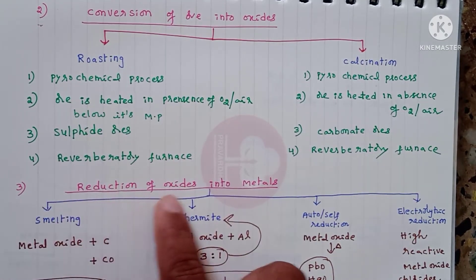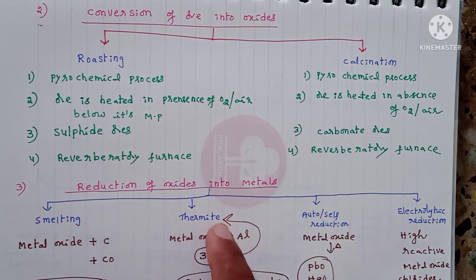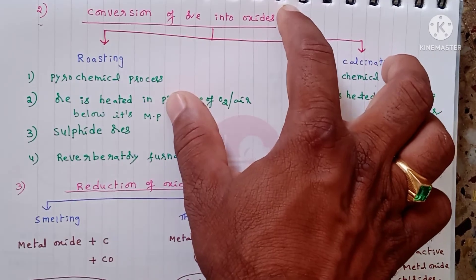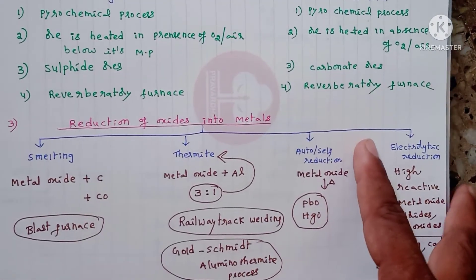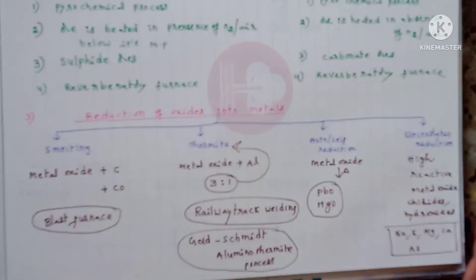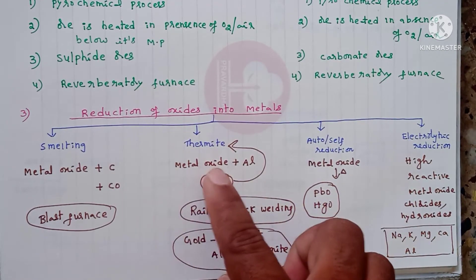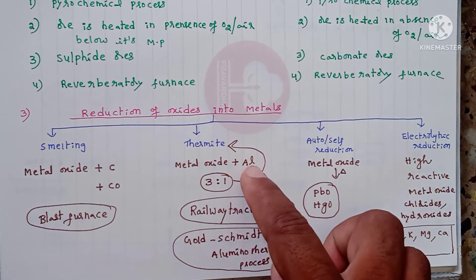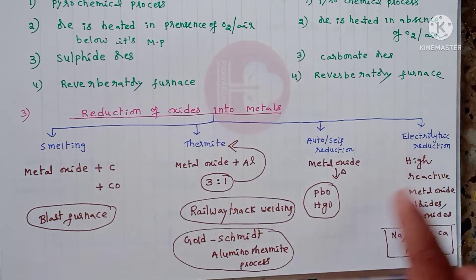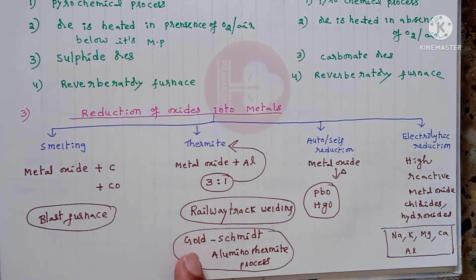The third step is reduction of oxides into metals. Four methods are used: smelting, thermite process, auto/self-reduction, and electrolytic reduction. In smelting, the metal oxide from step two is heated with coke or charcoal in a blast furnace to get the metal. In the thermite process, the metal oxide is heated with a reactive metal — aluminium — in a 3:1 ratio. This mixture is called the thermite mixture. The thermite process is mainly used for railway track welding and was developed by Goldschmidt.